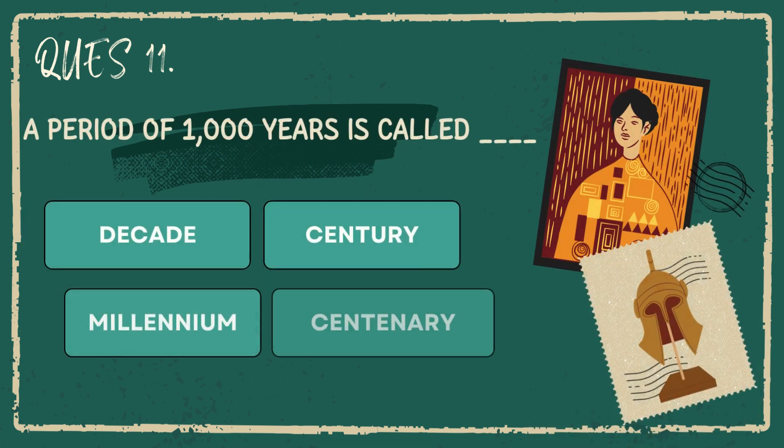A period of one thousand years is called: decade, century, millennium, centenary.